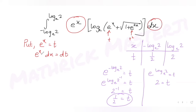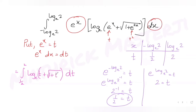The integral becomes: from 1/2 to 2 of log(t + √(1 + t²)) base e · dt, since e^x dx = dt and e^(2x) = (e^x)² = t², giving √(1 + e^(2x)) = √(1 + t²).